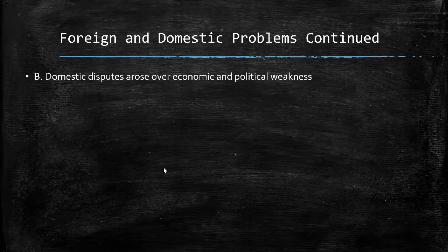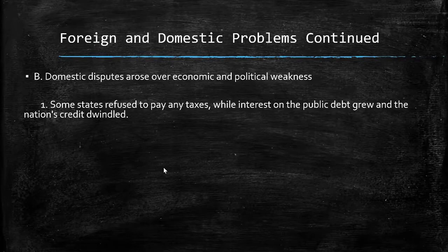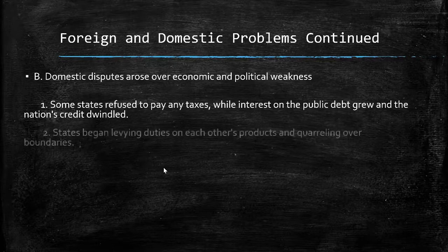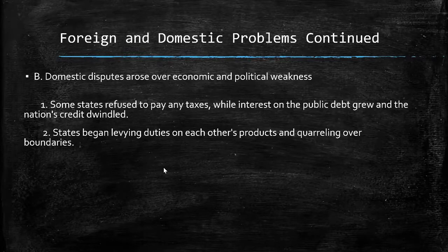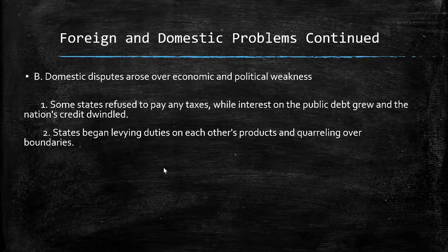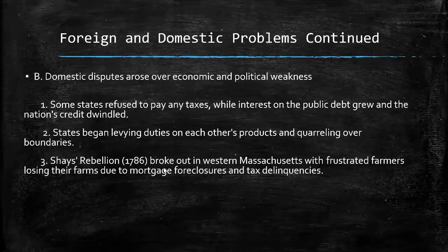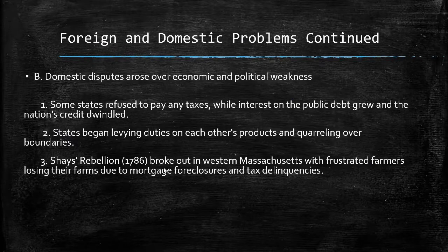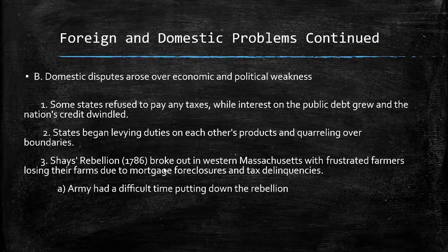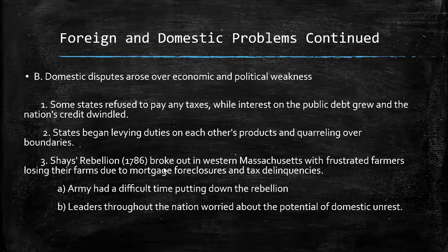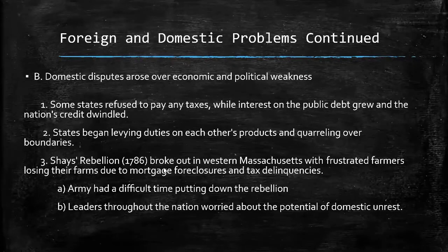Domestically, there were a myriad of problems that the Articles failed to fix. Some states were not contributing revenue to the national government, leading to debt problems with foreign countries and an inability to pay wages to war veterans. The national economy was in shambles, made worse with no unifying economic policy, and states quarreling over boundaries. Then a significant rebellion broke out in western Massachusetts, led by Daniel Shays, who along with fellow frustrated farmers had lost their farms due to mortgage foreclosures and tax delinquencies. Many of the farmers were former Revolutionary War veterans paid in worthless continental dollars. The national government had a very hard time putting down the rebellion, as it could not keep an army supplied, paid, and together. This led prominent leaders to worry about the inability of the national government to hold the country together.